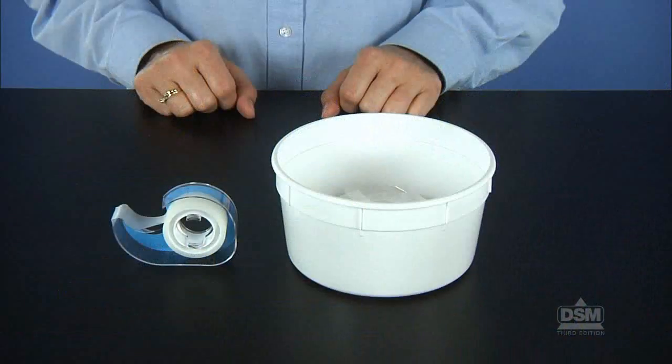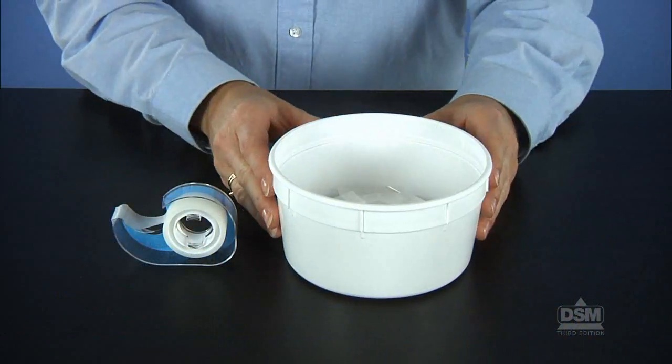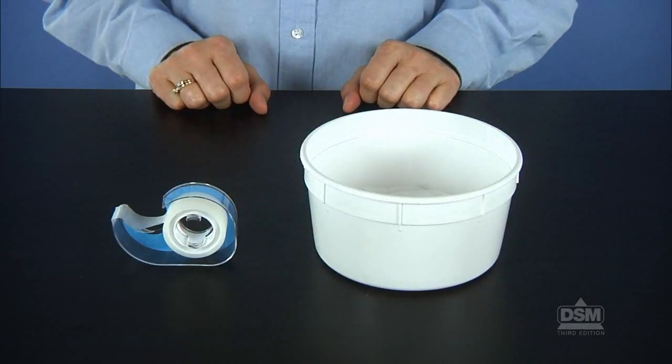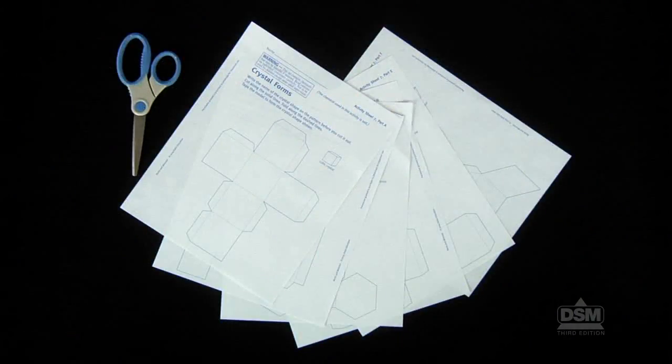Next, divide the class into groups of four and distribute one storage container with the mineral samples and magnifiers, and a roll of tape to each group. Then, give one pair of scissors and a copy of Activity Sheet 7, parts A through F, to each student.